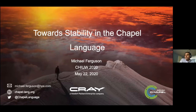It's 12:15, so I guess we should get started. This is the language evolution session. My name is Nikhil Badmanarvin, and we've got two talks here. The first one is Michael Ferguson talking about stability in the Chapel language.